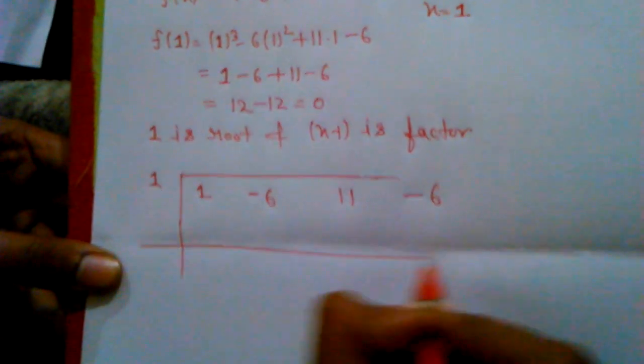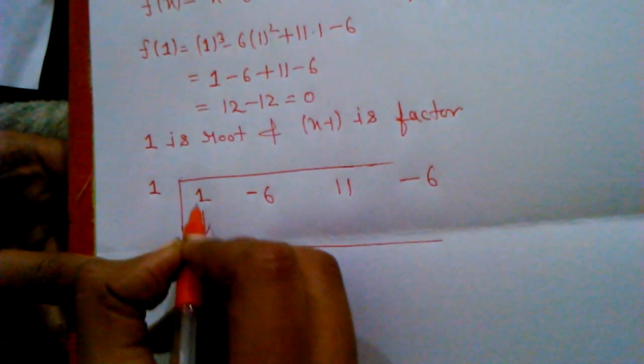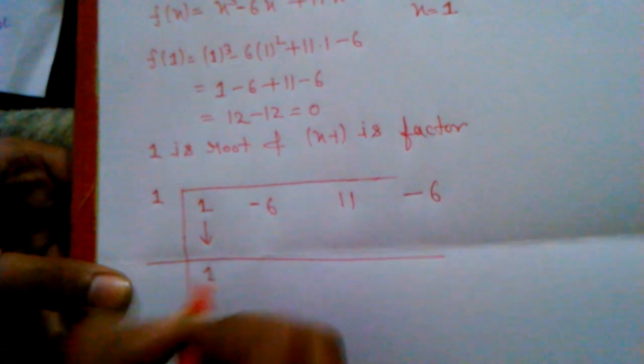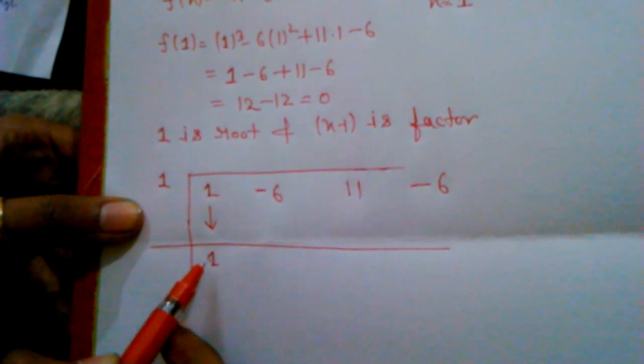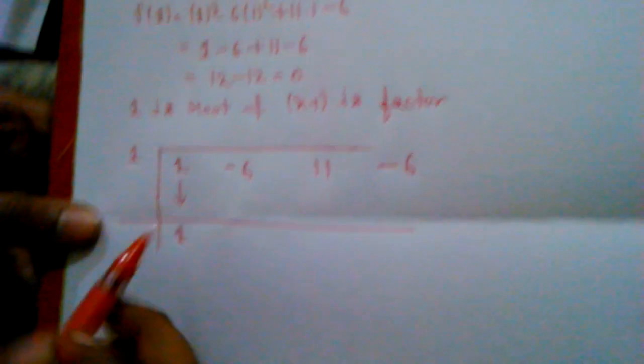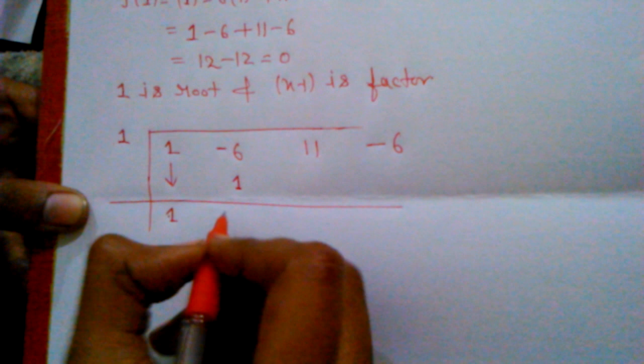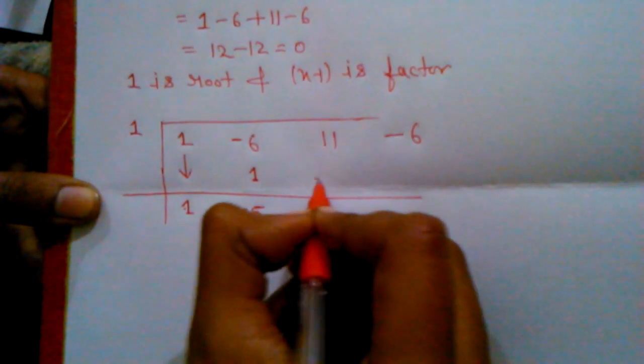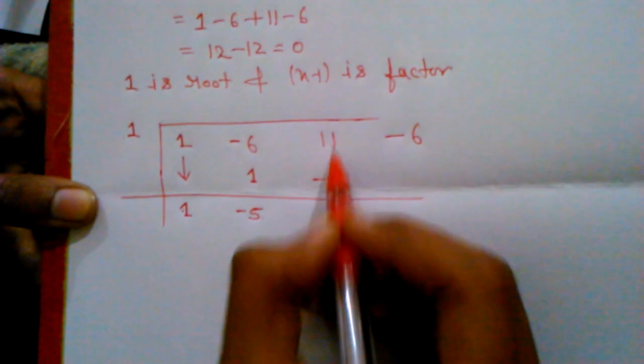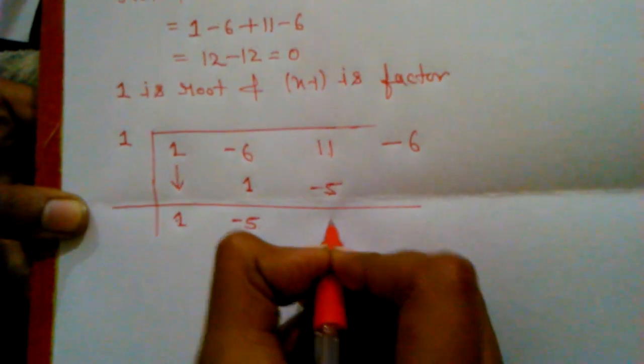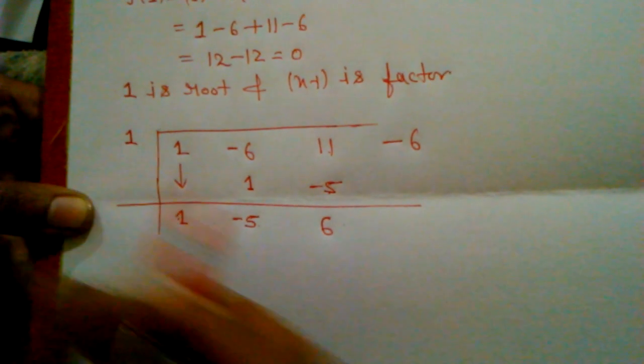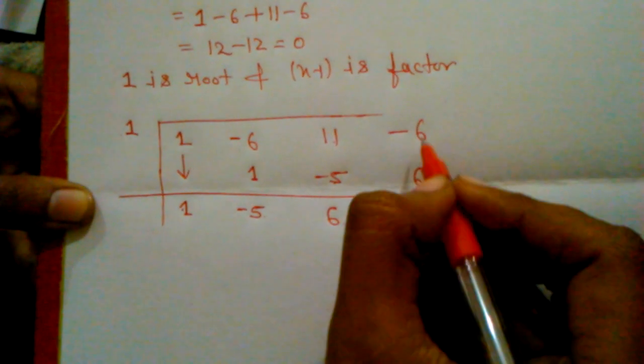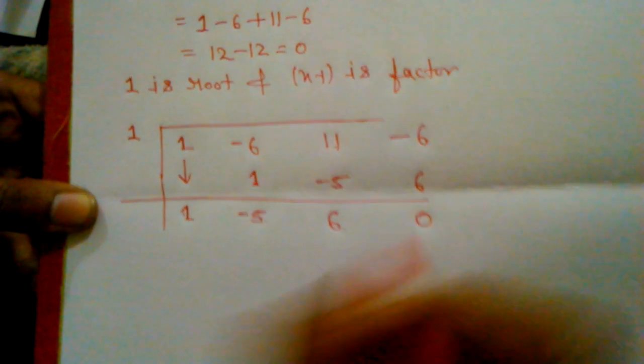And now, just repeat this value, that is 1. Now, 1 times 1, that is 1, and -6 + 1, that is -5. Again, 1 times -5, that is -5, and 11 + (-5), that is 6. 1 times 6, that is 6, -6 + 6, that is 0.